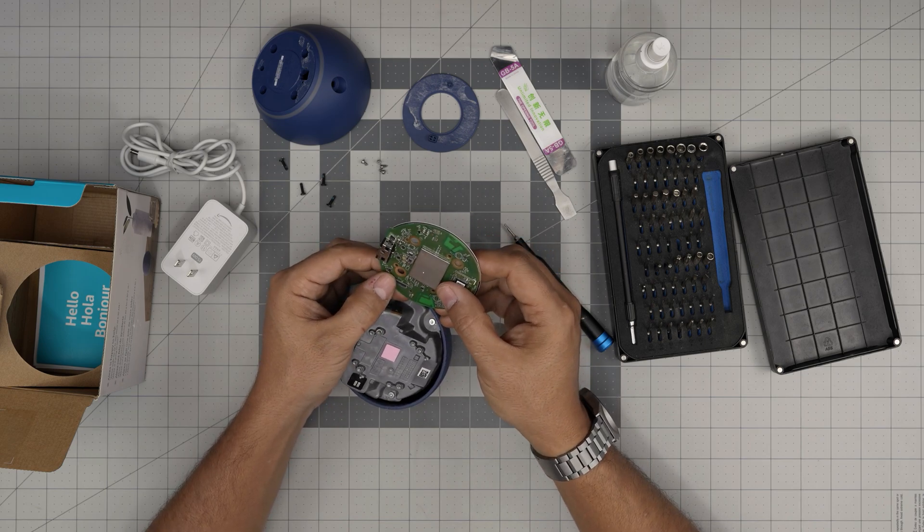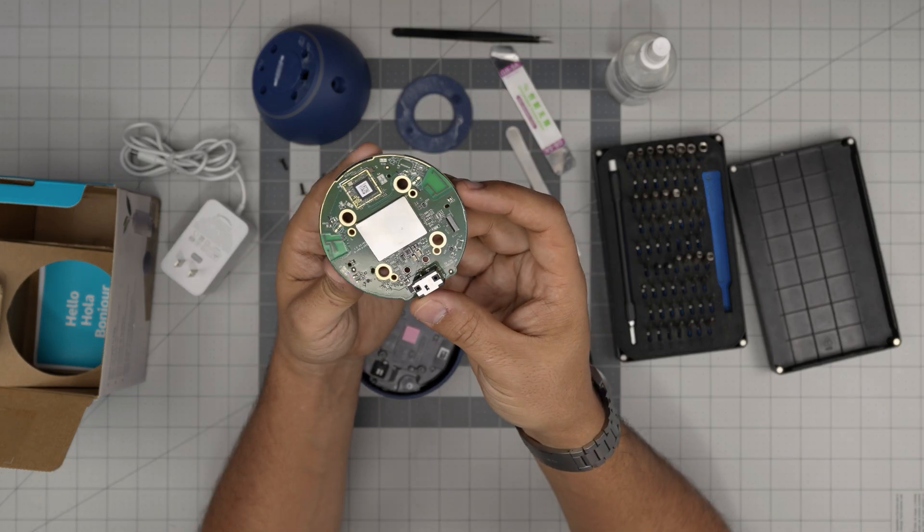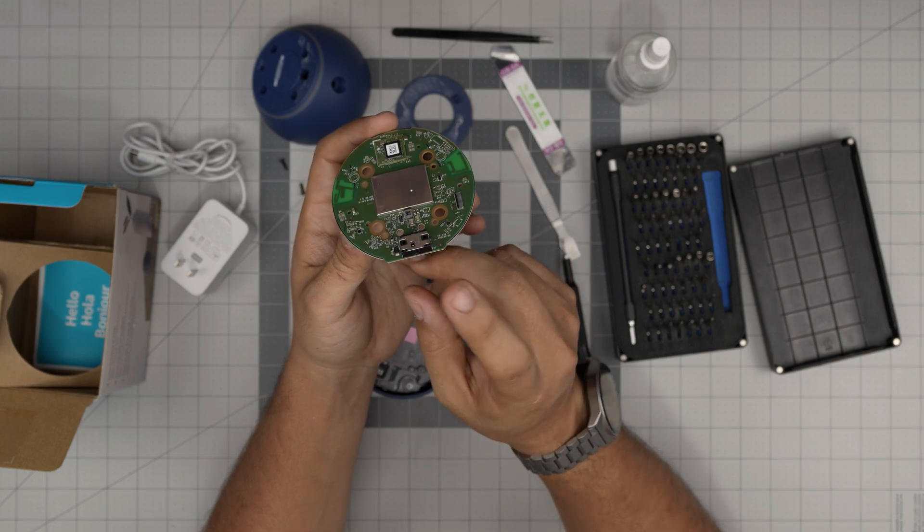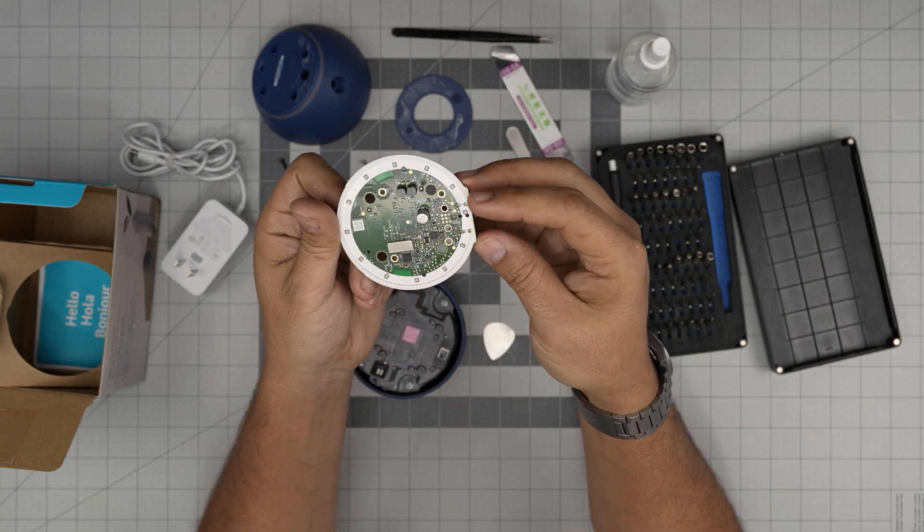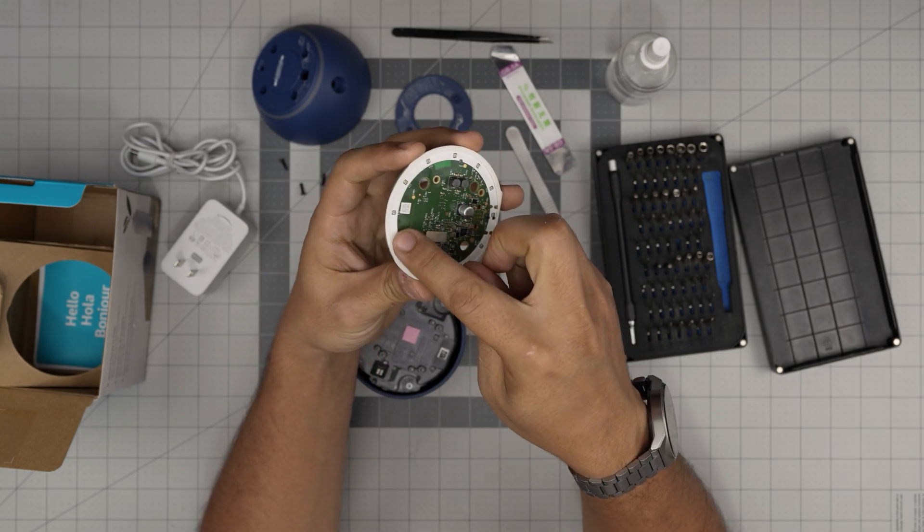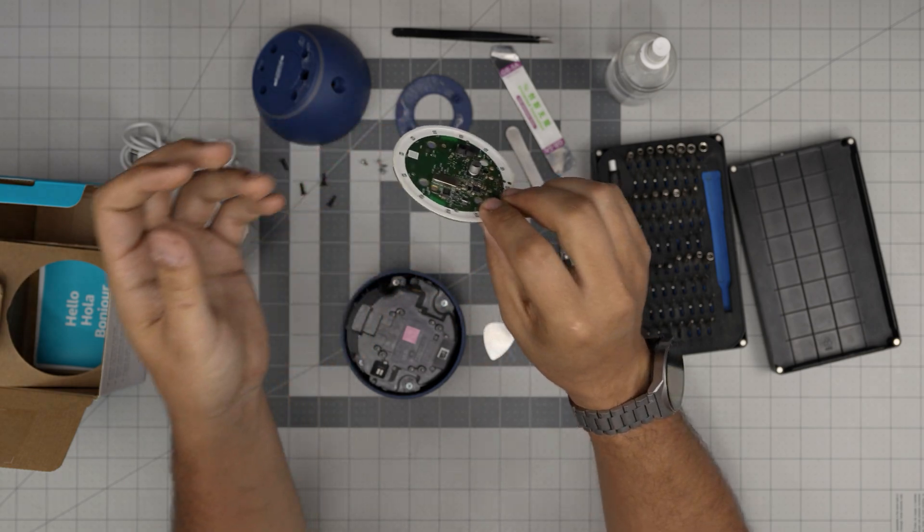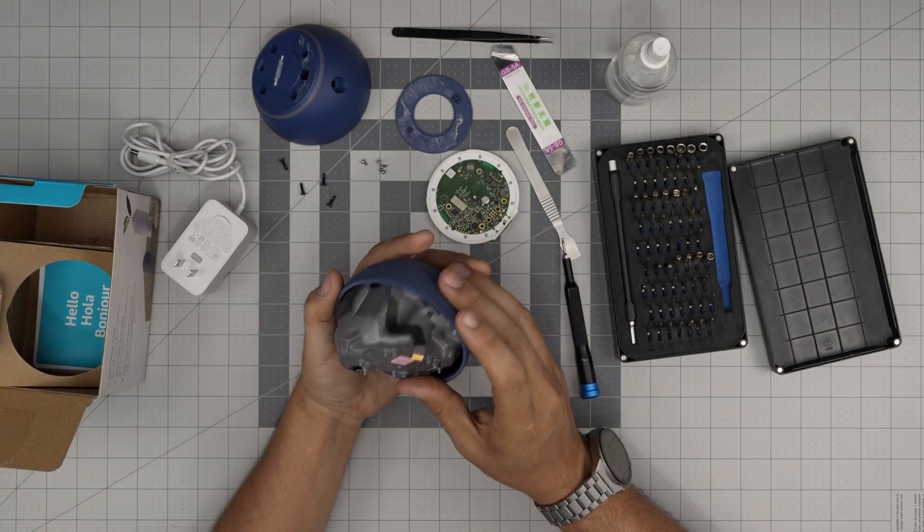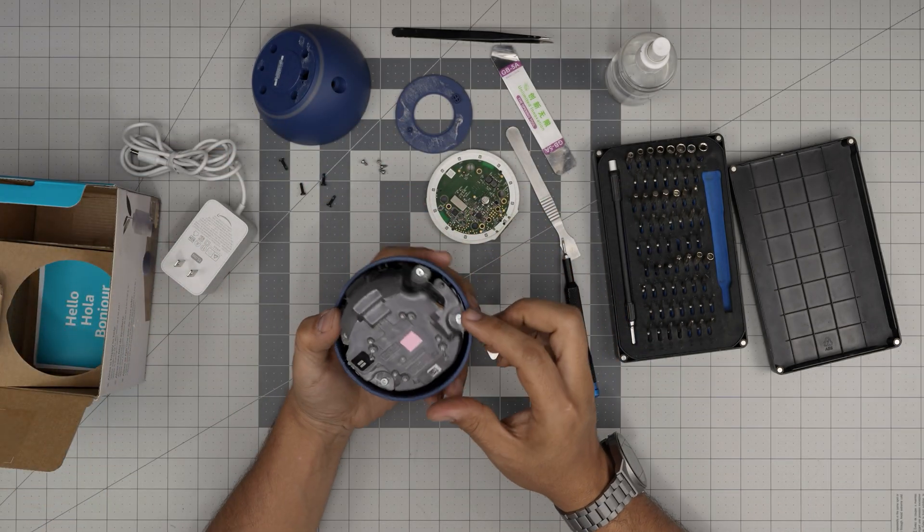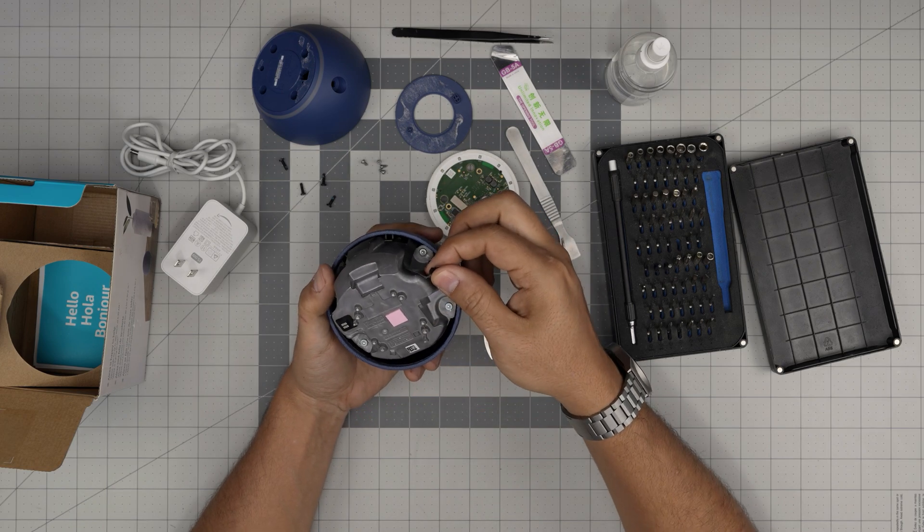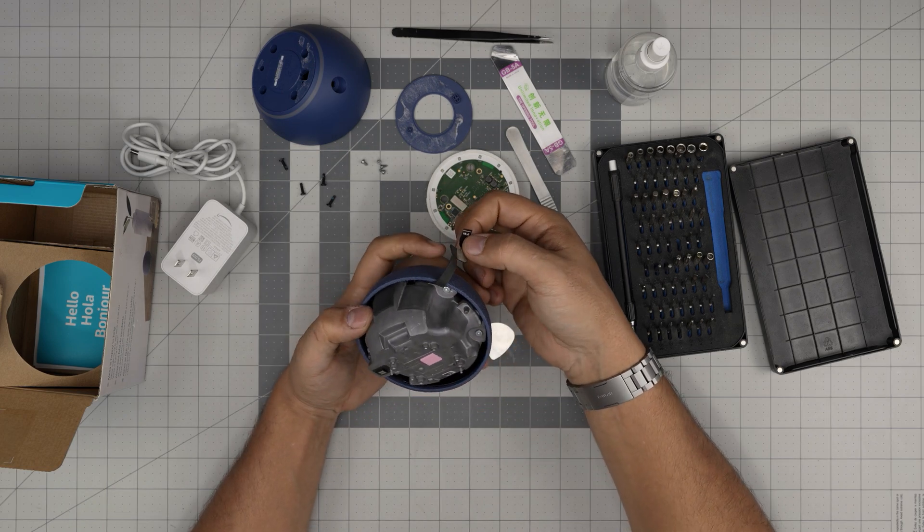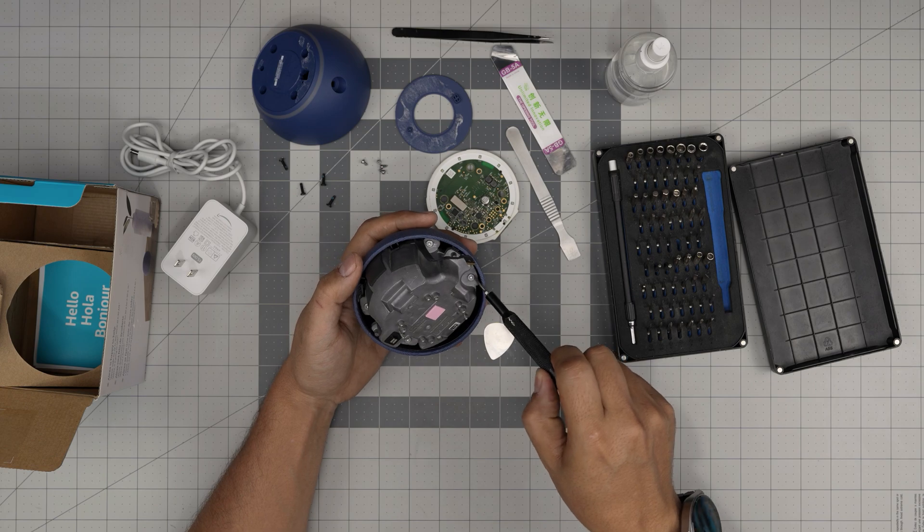We've got the main board right here, the power jack, a few components on both sides, LED lights right over here. We're going to leave this to one side and we have the housing.